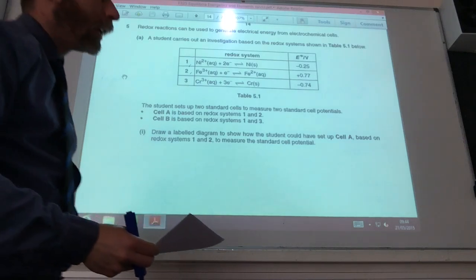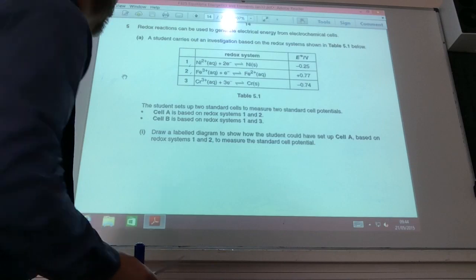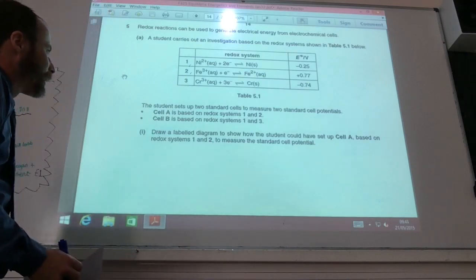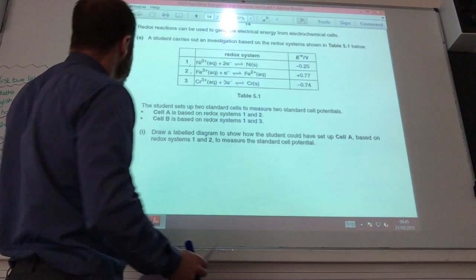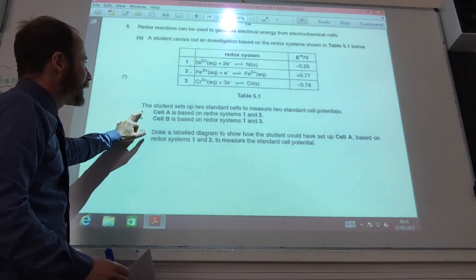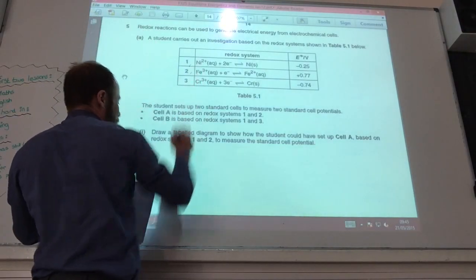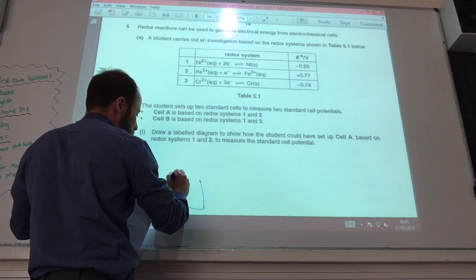Alright, so we're going to move on and tackle question 5, which is some electric potentials. So first of all, part 1, draw a labeled diagram to show how the student can set up cell A. Cell A is based on redox systems 1 and 2. So let's tackle number 1 first of all.